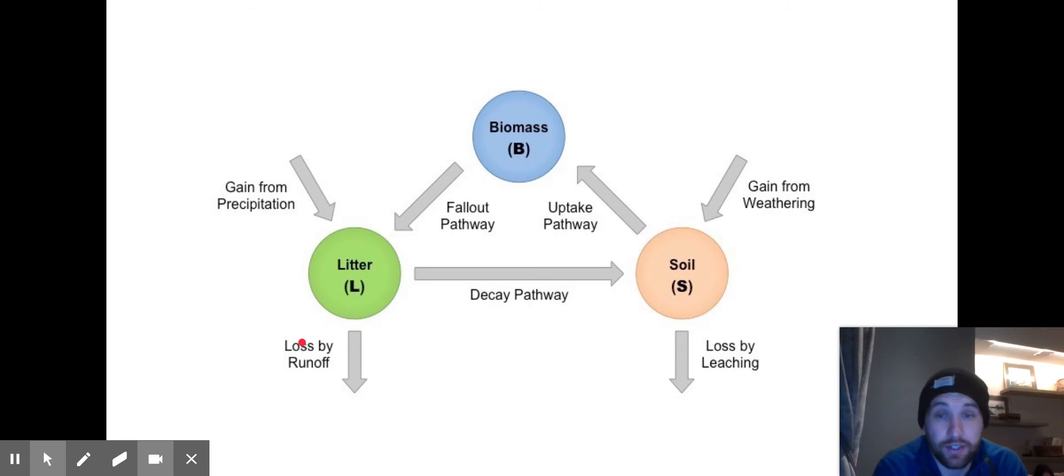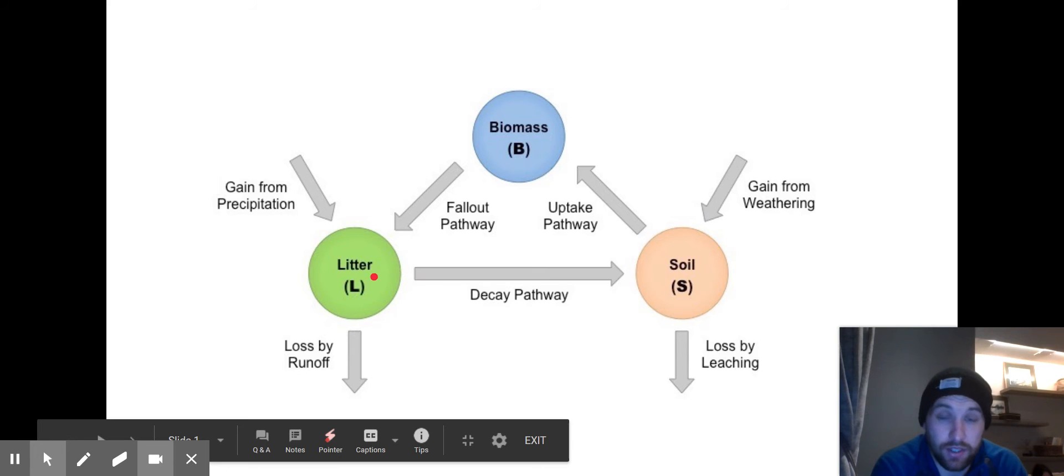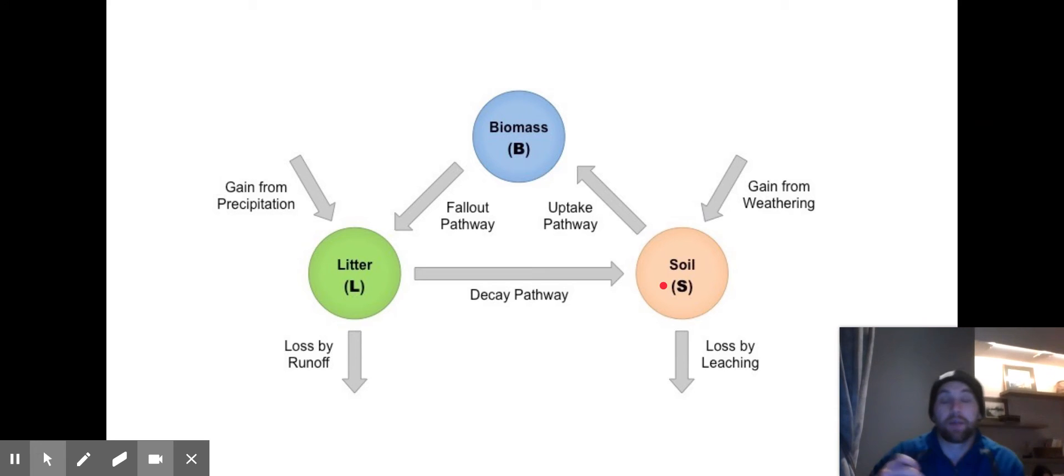Then we also have decay and decomposition, so this is where those leaves and organic material is broken down by bacteria and microorganisms, and the nutrients are transferred into the soil. So that's the basics of how that system works. But these diagrams are designed to be proportional, so the size of the store or arrow changes due to where the nutrients are being held.